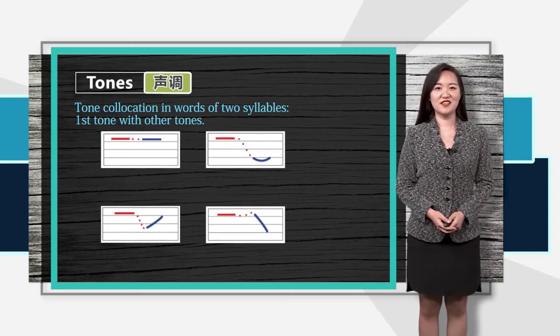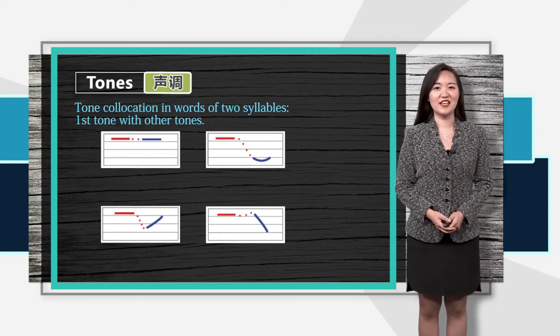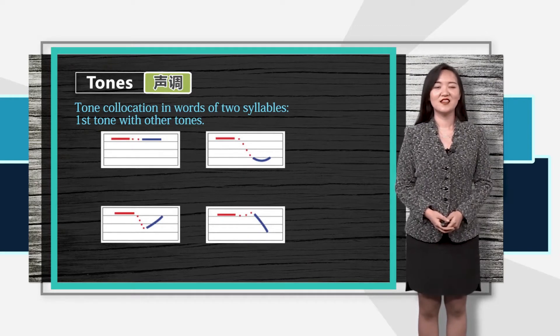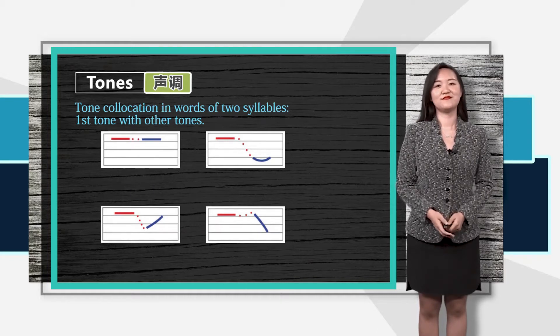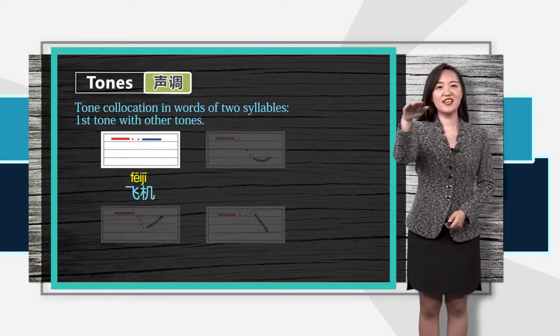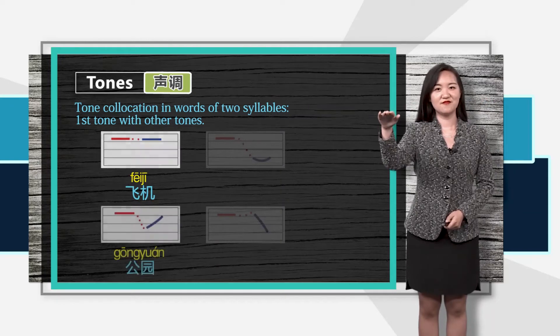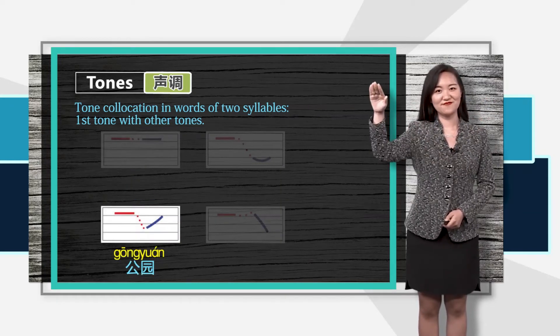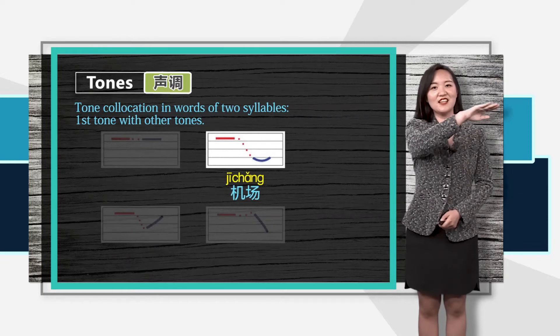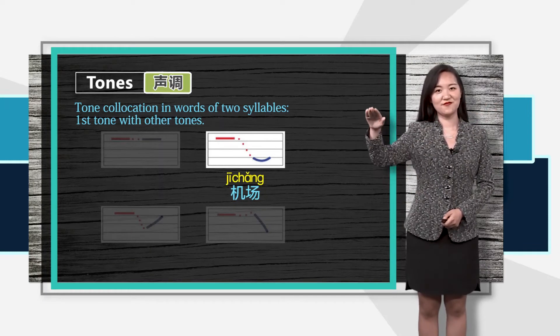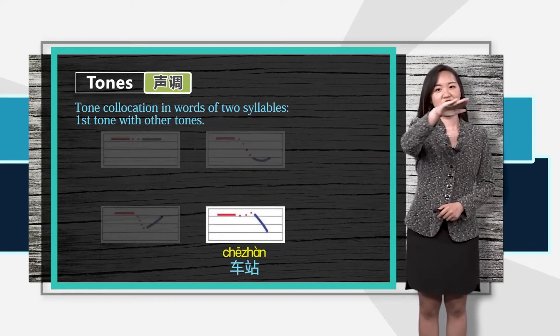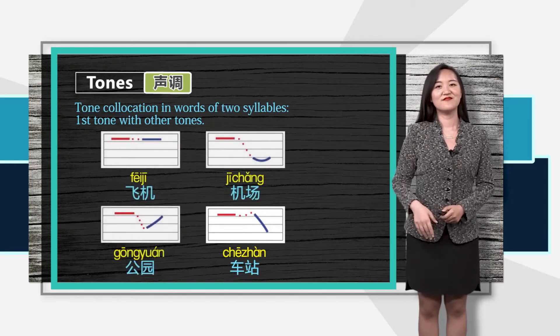Today we're going to focus on how the first tone collocates with other tones. Follow me: 飞机, 公园, 机场, 车站. Well done.